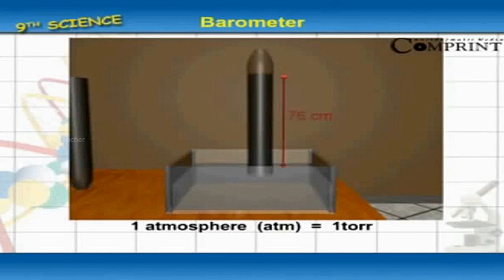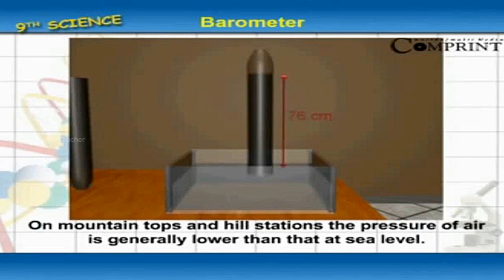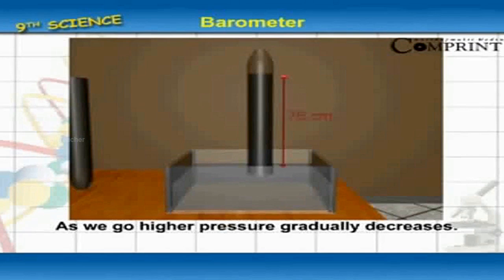1 atmosphere is equal to 1 torr. On mountain tops and hill stations, the pressure of air is generally lower than that at sea level. As we go higher, pressure gradually decreases.